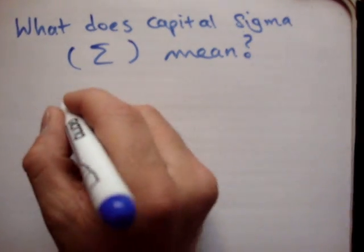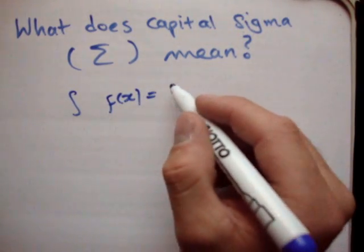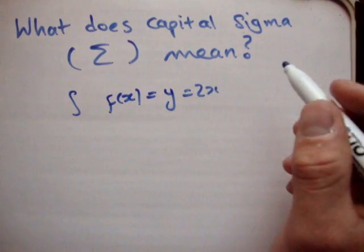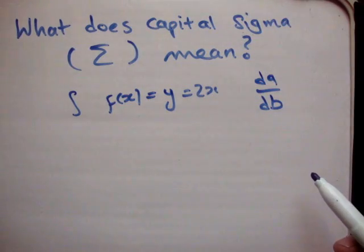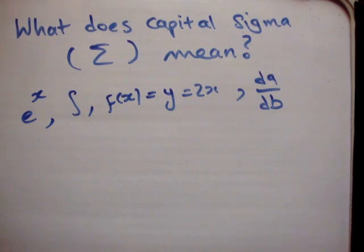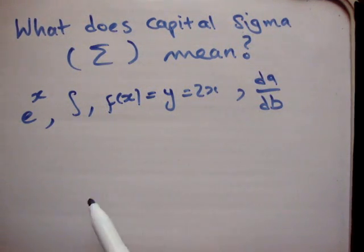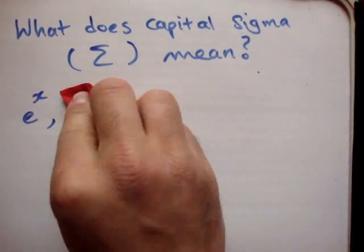But the truth of the matter is, just like an integral, just like a function f(x) = 2x, just like a differential, just like an exponential e to the x — all those are actually very simple. The problem is that you're not told in school what they really mean and what they're used for. If you don't know what any of these mean, look at the videos I've put up. This is just a continuation of that series of videos.